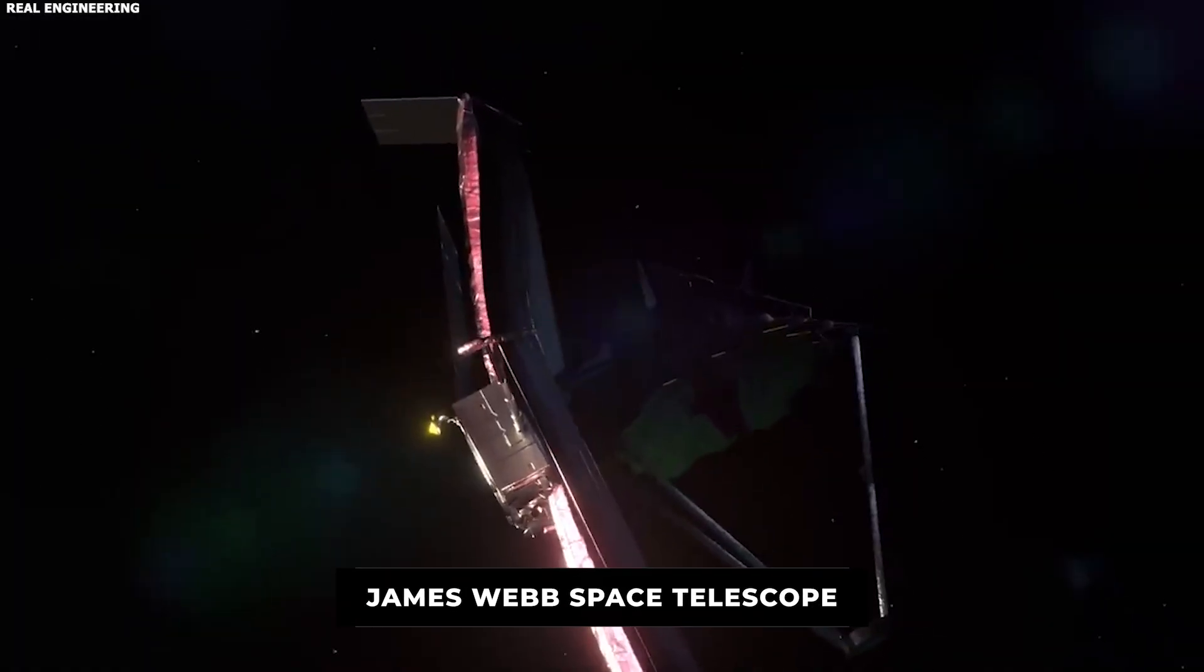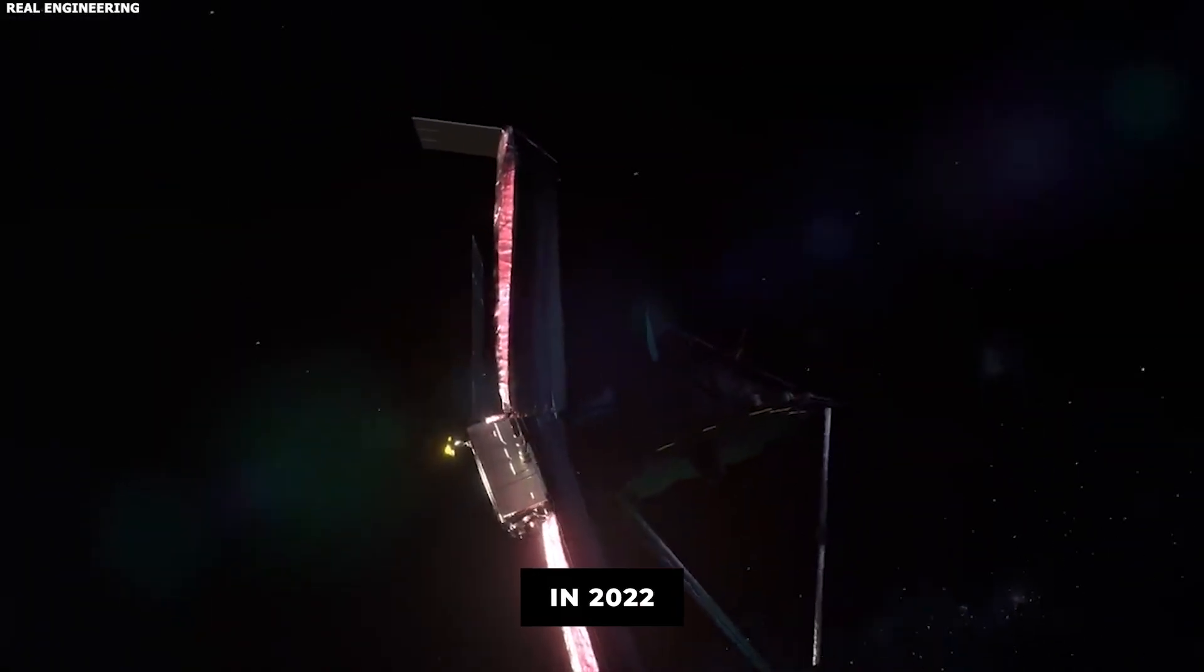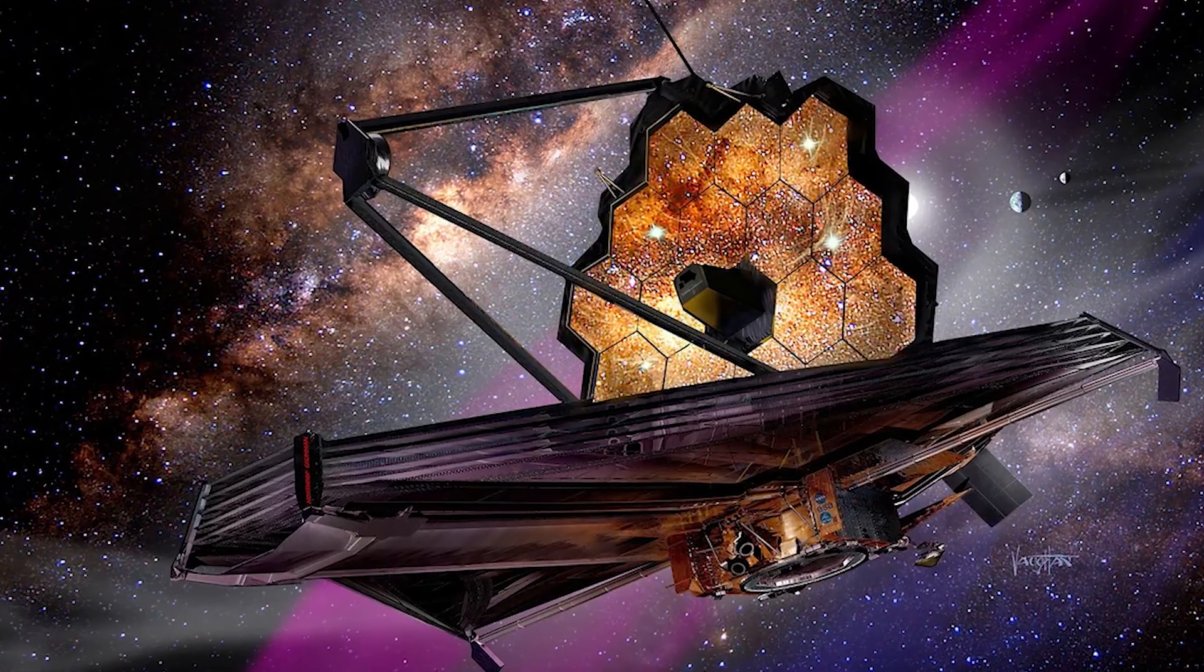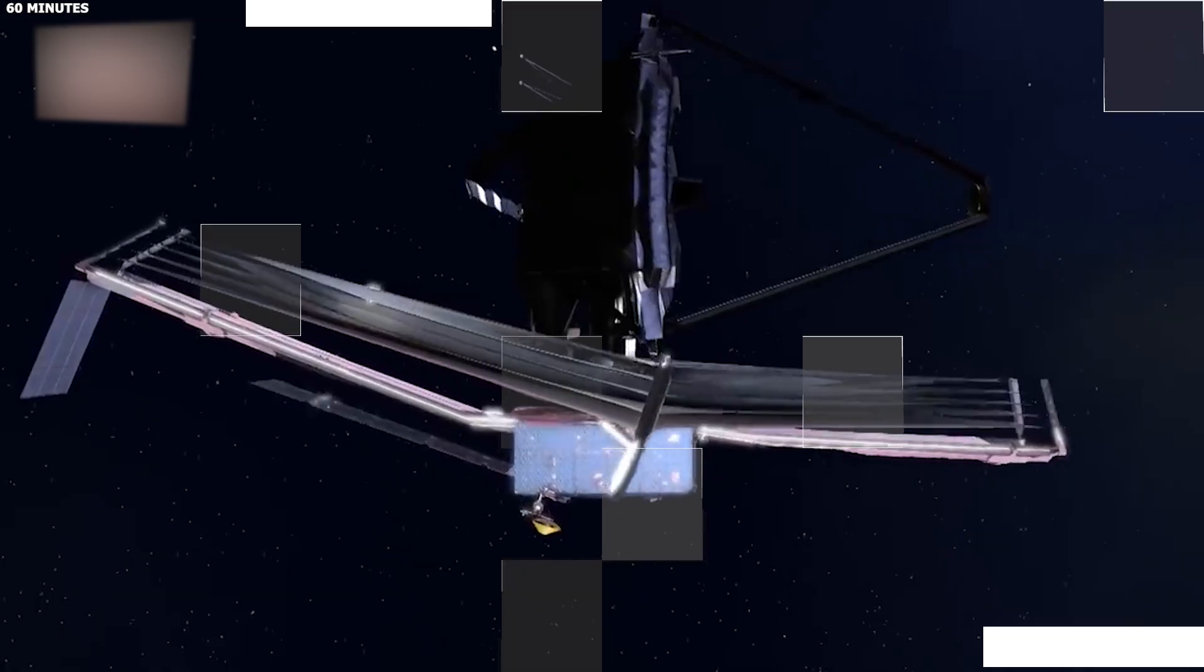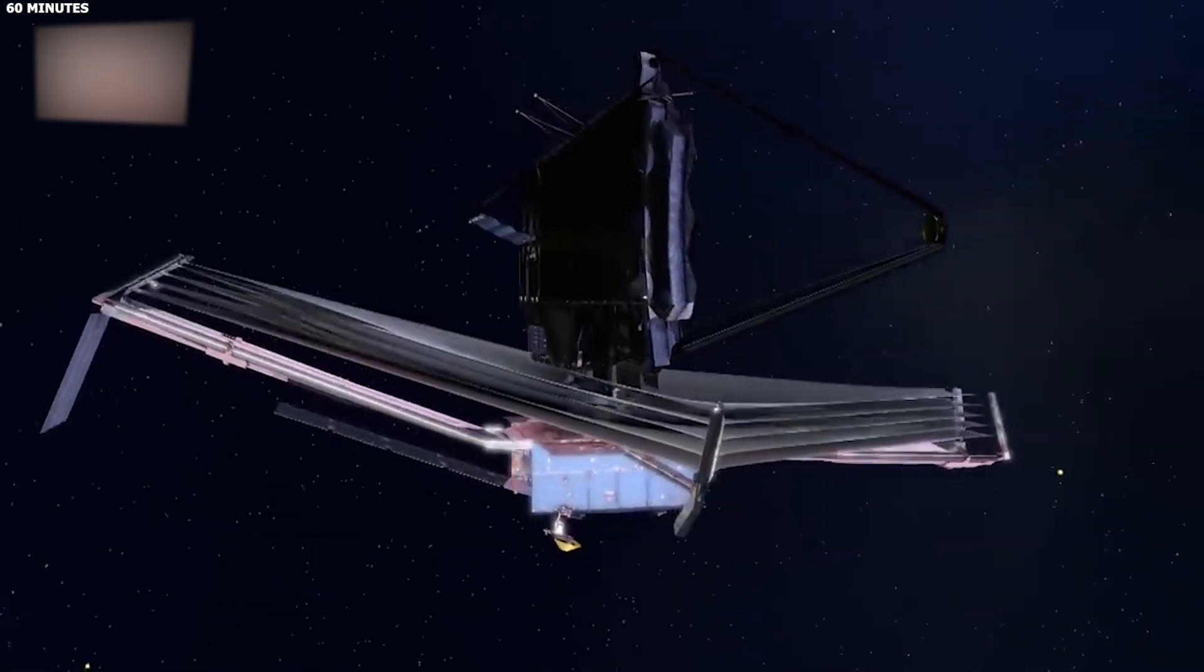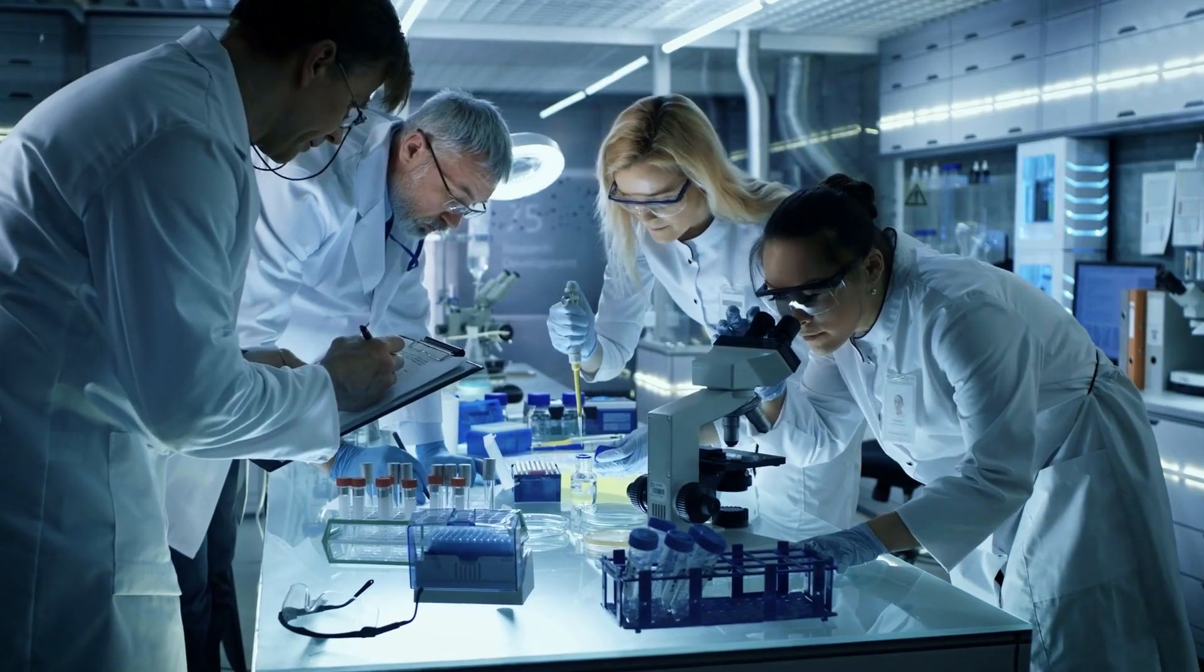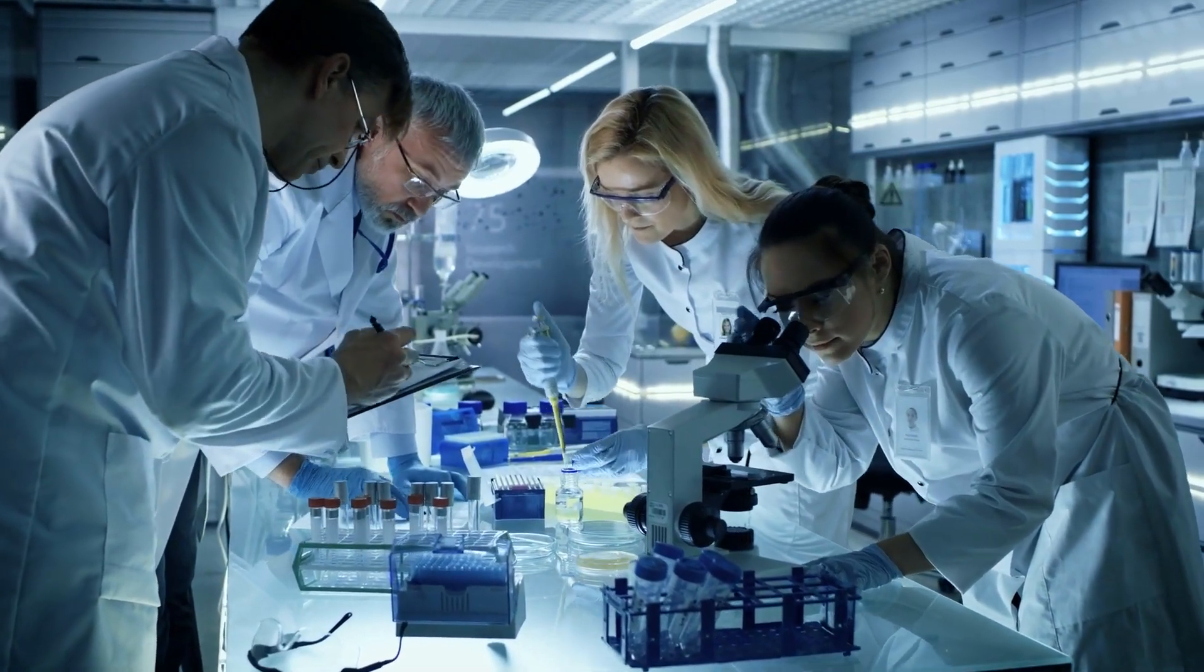The cracks. The James Webb Space Telescope went online in 2022 as the most powerful space observatory ever built. Its mirror is so large and its instruments so sensitive that it can see deeper into space and further back in time than any telescope before it. Scientists were excited to test their theories about the early universe. They were expecting confirmation. Instead, they got chaos.